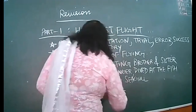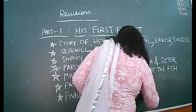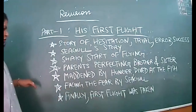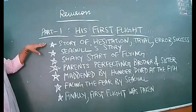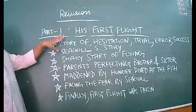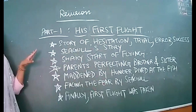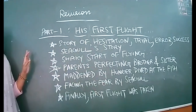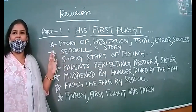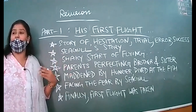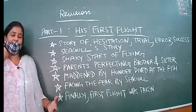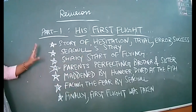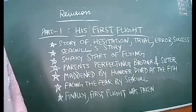The first flight was taken by the seagull — this is the way it learned to fly by trial and error method. These are the value points. The theme is: this is the story of hesitation, trial, error, and success. You cannot be successful in life unless and until you try. In any skill of our lives, we have to learn it, practice it, and we will be successful. Without practice we cannot succeed — this is the example of the seagull's story.